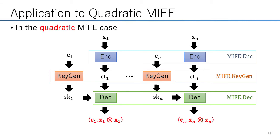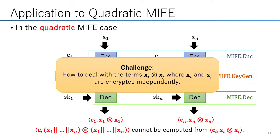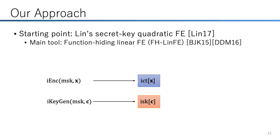This blueprint is not applicable to construct quadratic MIFE. Suppose each instance outputs a quadratic function over each input. The multi-input quadratic function cannot be computed from these, since it also contains quadratic terms derived from different inputs. So the challenge is how to deal with such terms. Especially, the difficulty lies in the fact that x_i and x_j are encrypted independently. So we do not use such a parallel execution of single-input FE, and instead take a new approach inspired by the secret key quadratic FE proposed by RIN.